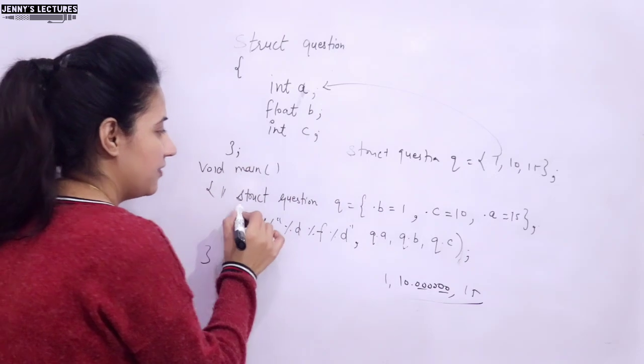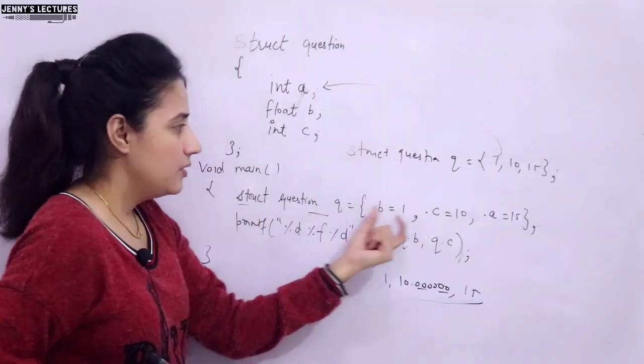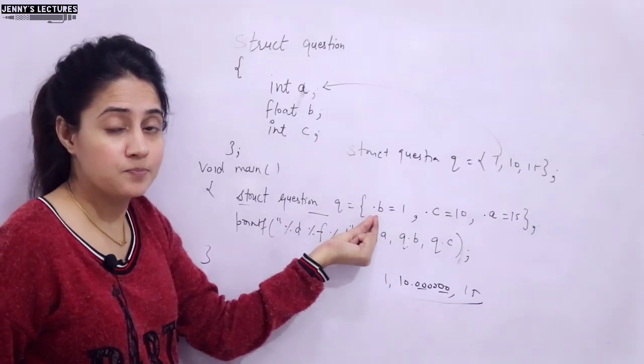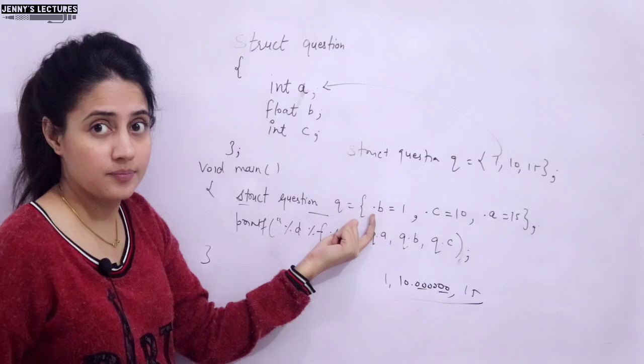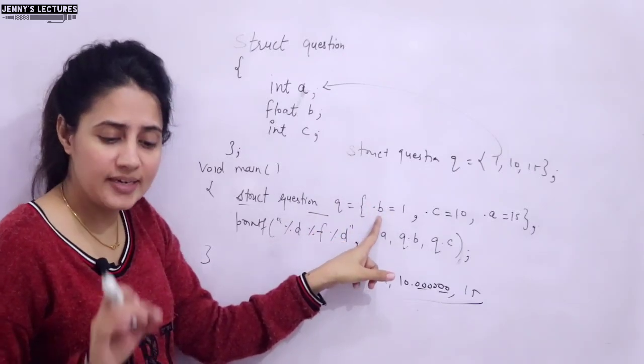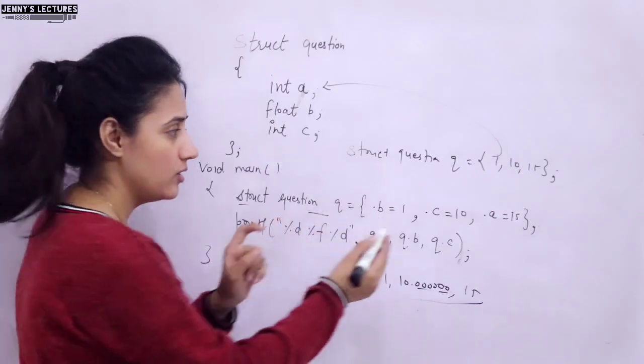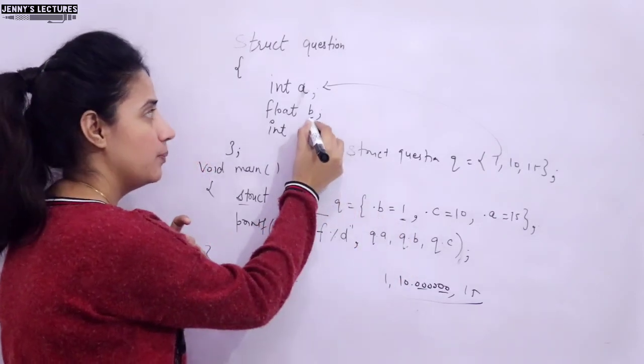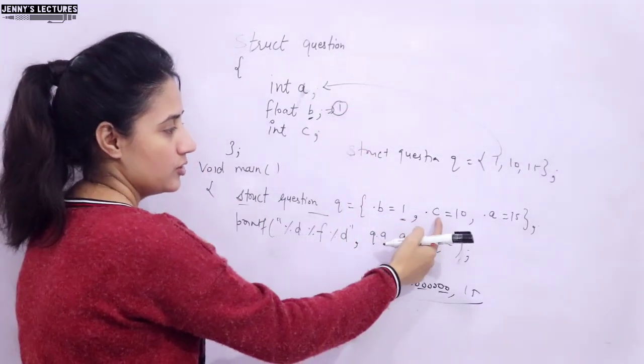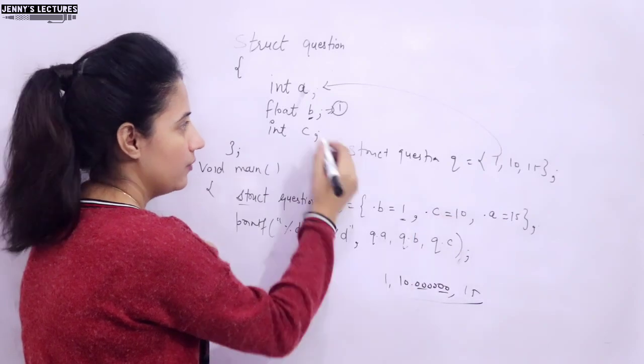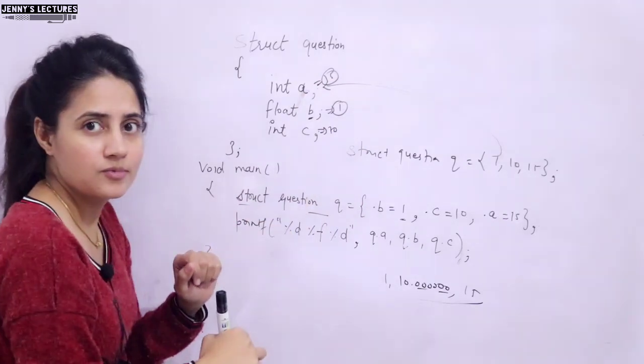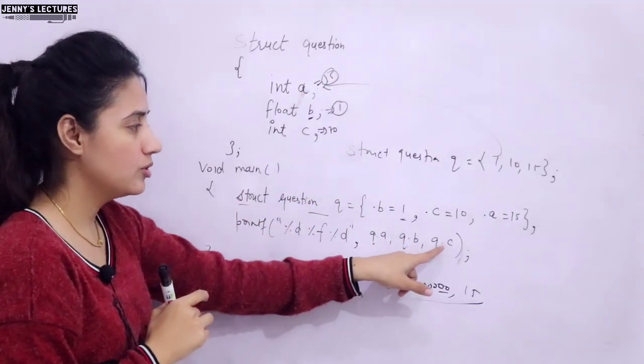Now, but I have initialized something like this. And with these curly braces, I am writing, see dot operator is very important. You cannot access these members without dot operator. Right. So dot B is equal to 1, means this is what a designated initialization. I want this 1 would be given to this B. So this 1 would be given to this B. In this case, dot C means 10 would be given to this C and this 15 would be given to this A.